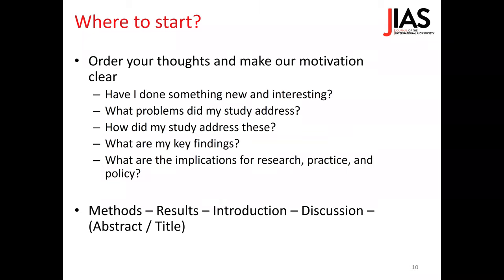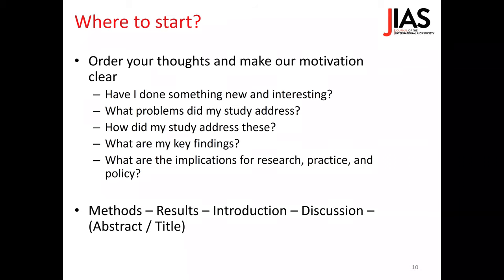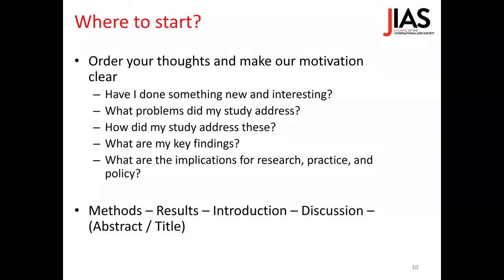Once you have done this, many people start with the methods section, as this is often the easiest section to write — you know how you conducted your study, and there are often conventional phrasings to describe it. Then authors usually go over the results section and decide which information should be displayed in figures or tables. After that, you write the introduction, and finally the discussion, because this is the most difficult part. The abstract and title can be started as a preliminary version and finalized once the manuscript is ready.